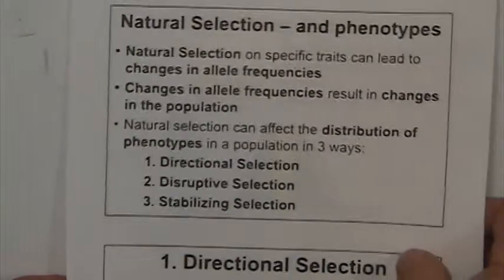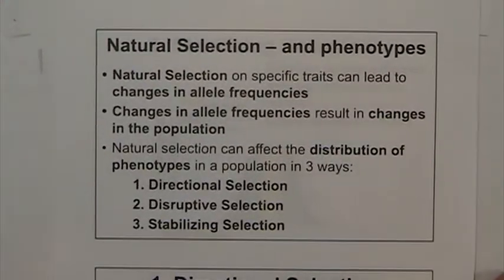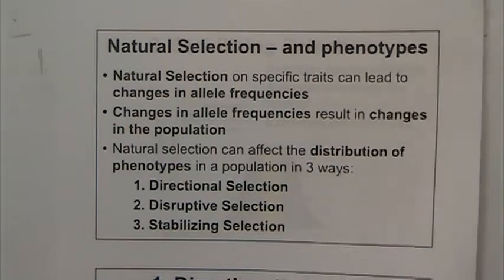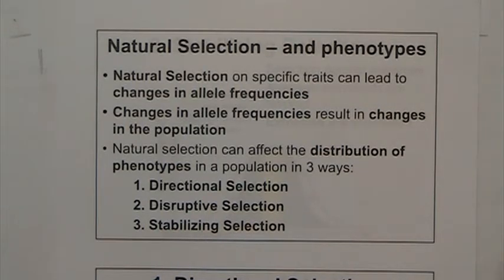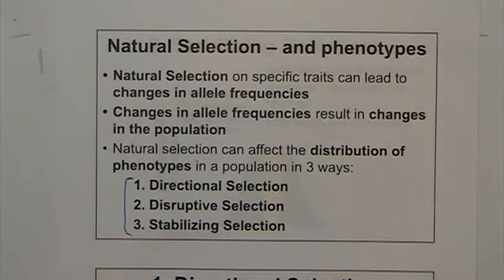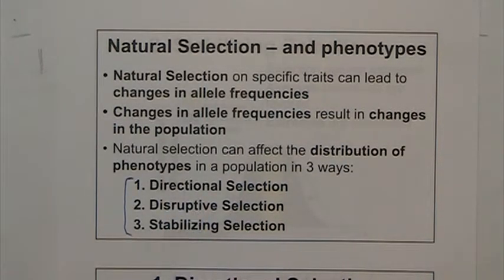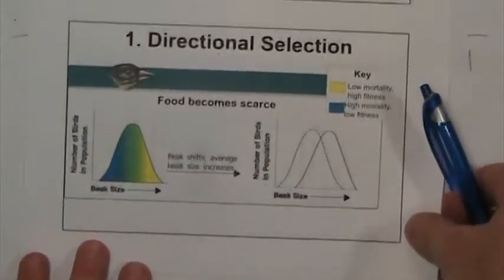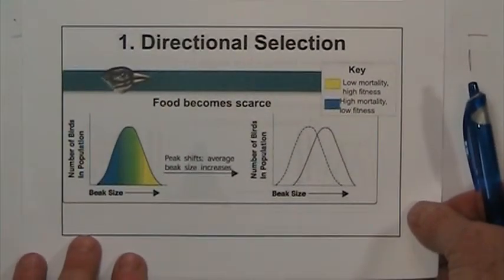So what does natural selection do to phenotypes? It's going to change their phenotypes and you are going to see three patterns: directional, disruptive, or stabilizing selection. I'll give you some graphs and then we'll talk some more about this in class.